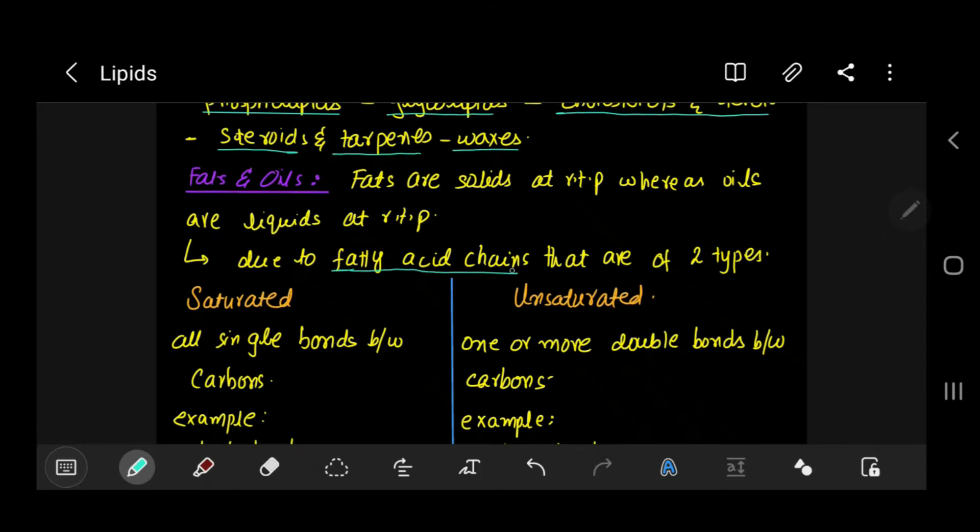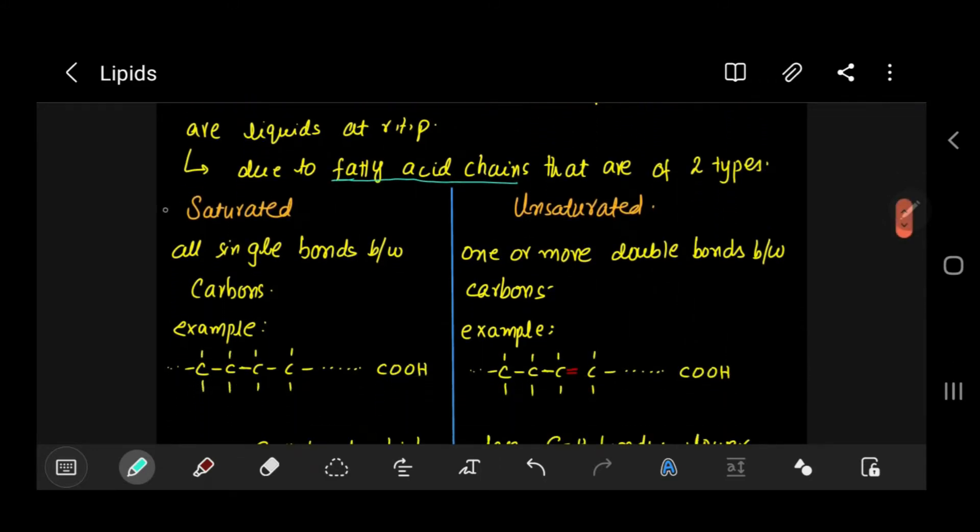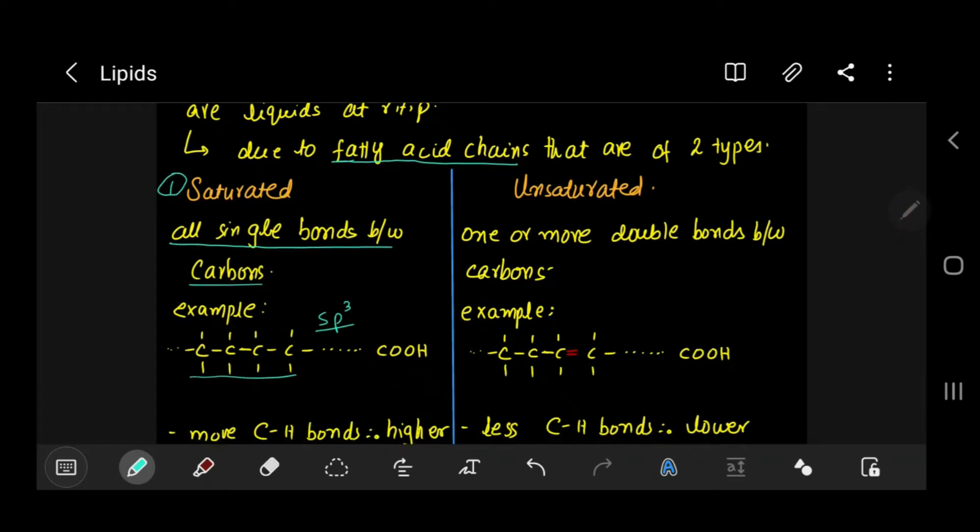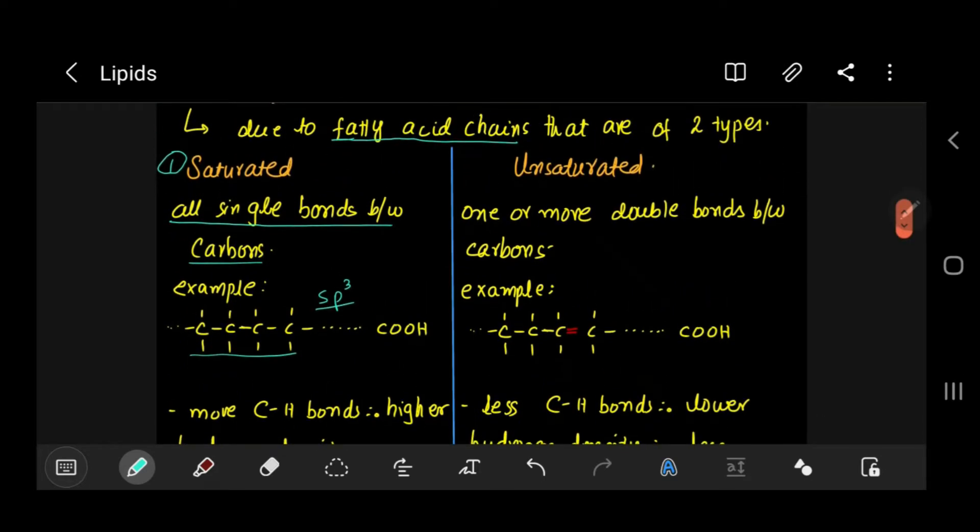The first type is saturated fatty acid chain. In a saturated fatty acid chain, we have all single bonds with carbons. A carbon is sp3 hybridized, it has all single bonds. This is a saturated fatty acid chain.